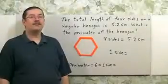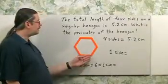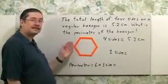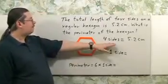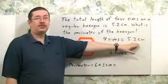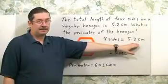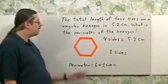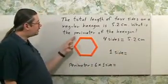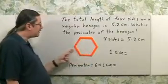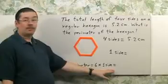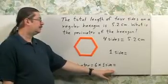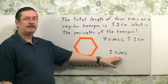A regular hexagon has six equal sides with six equal angles. We know the total length of four of the sides is equal to 5.2 centimeters. If you want the perimeter, you need to figure out what is the sum of the measurements of all the sides here. The perimeter is six times the length of one side. But I don't know what that is. How can we find it?